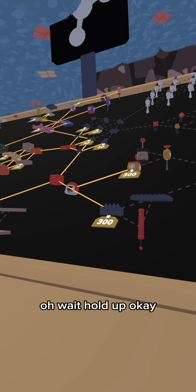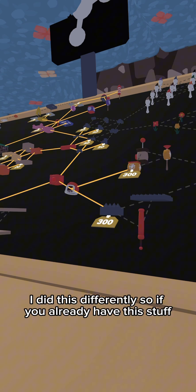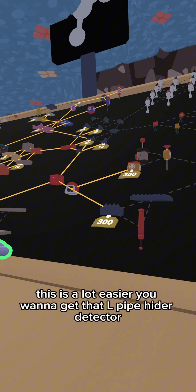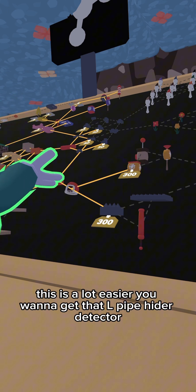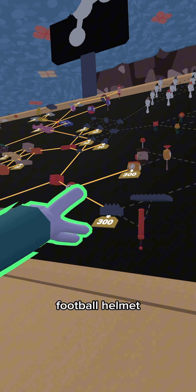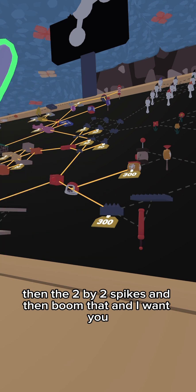Okay, I did this differently. So if you already have this stuff, this is a lot easier. You want to get that L pipe, hydro detector, football helmet, then the two by two spikes and then boom, that.